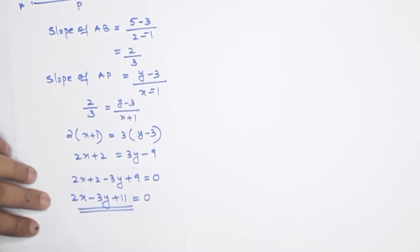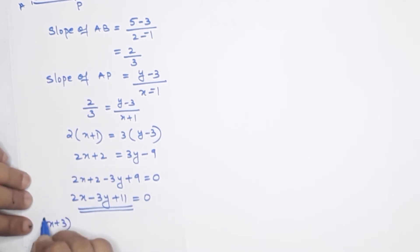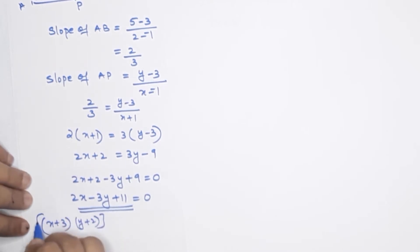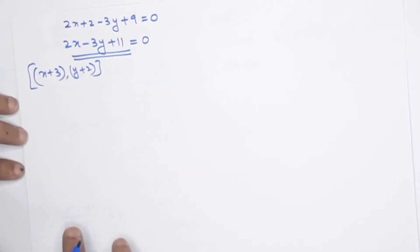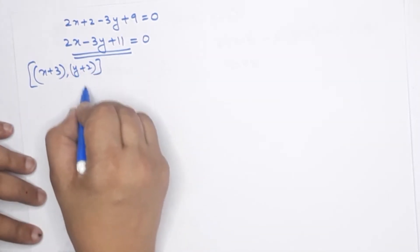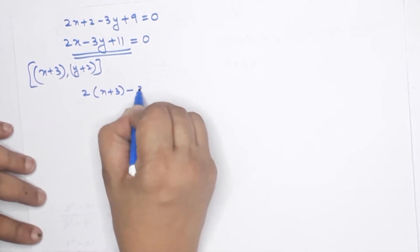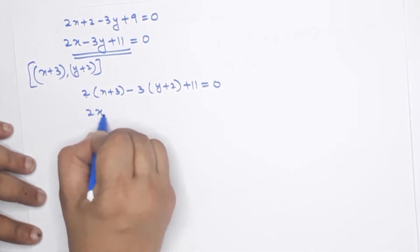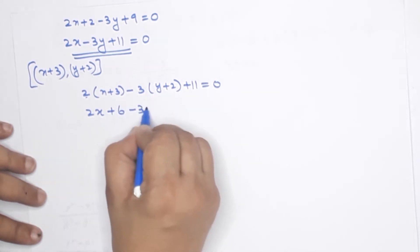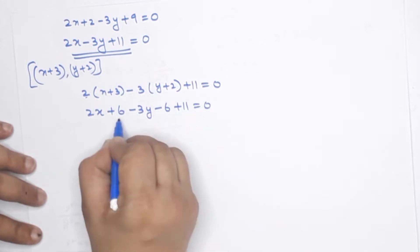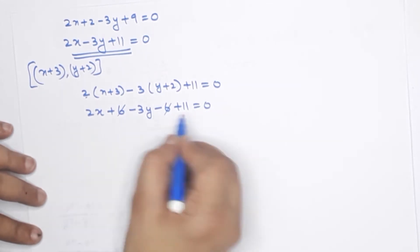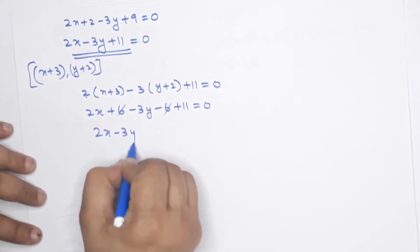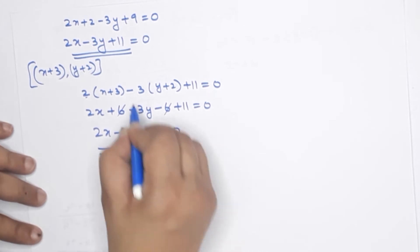We need to check the point (x+3, y+2). These two points — the x-point and y-point — are on this line. Let's put this point into the equation: 2(x+3) minus 3(y+2) plus 11 equals 0. Distributing: 2x plus 6 minus 3y minus 6 plus 11 equals 0. The plus 6 and minus 6 cancel out.